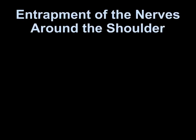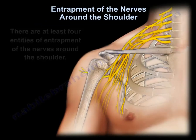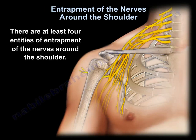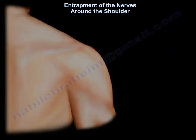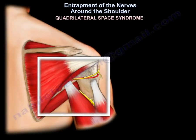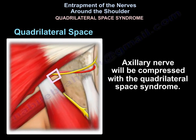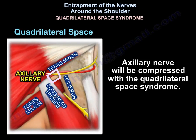There are at least four entities of entrapment of the nerves around the shoulder. The first one is the quadrilateral space syndrome, where the axillary nerve is compressed.